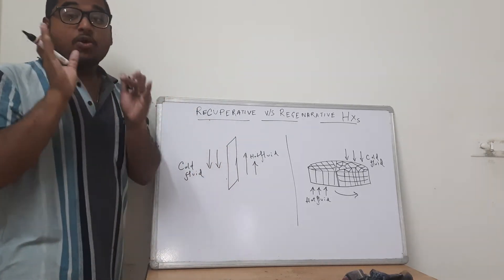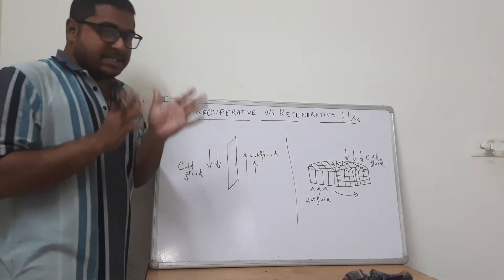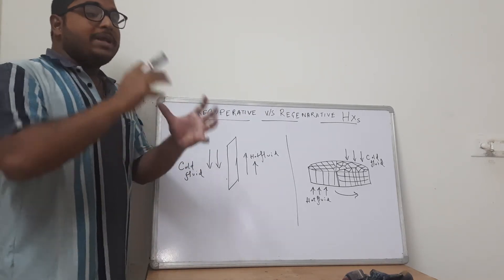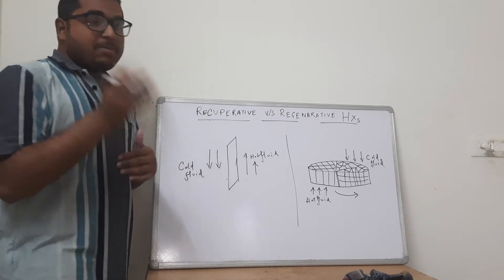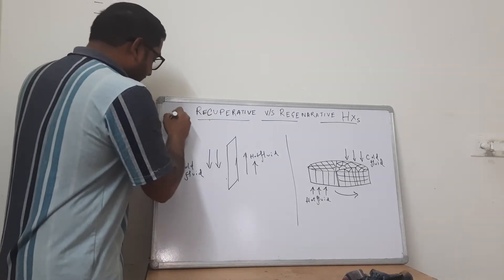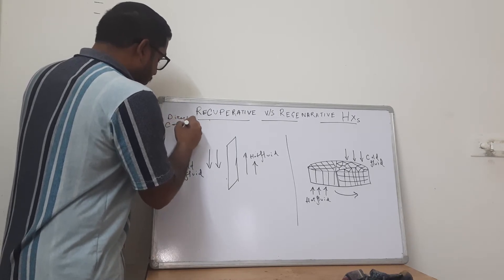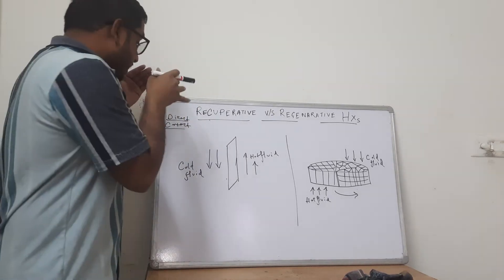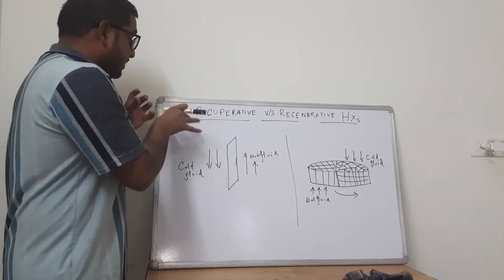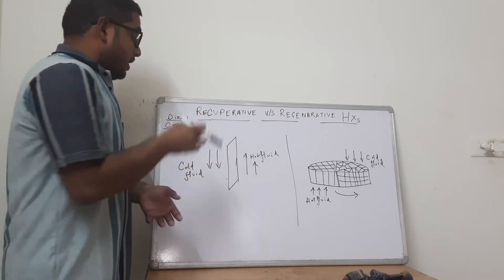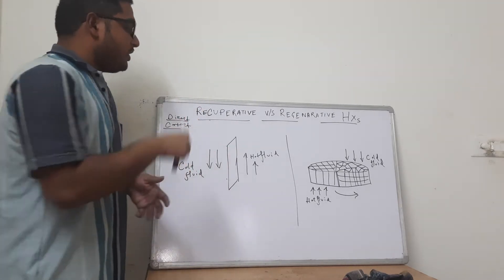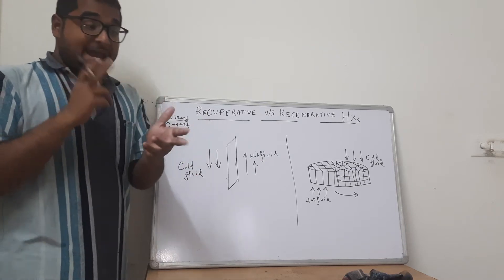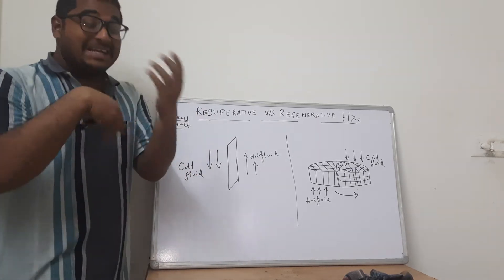When we discuss the contact of the hot and cold fluid in heat exchangers, there are three basic types. One is the direct contact heat exchanger, wherein the hot fluid is directly mixed with the cold fluid and therein occurs mass transfer as well as heat transfer. Direct contact type heat exchangers are not generally used in the industry because heat exchangers primarily should include heat transfer and not mass transfer. If the hot fluid is made to come in direct contact with the cold fluid, there is a probable chance of mass transfer along with heat transfer.